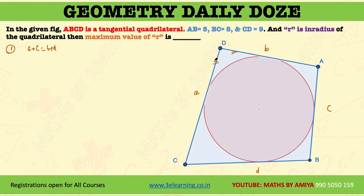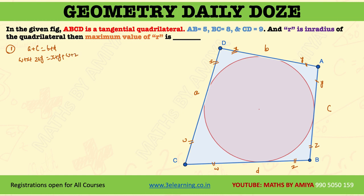How come? Because tangents are equal. If you say X, then it will be X. If you say Y, then it will be Y. If you say these two tangents are Z in length, then it will be Z. This one is W in length. So A is nothing but W plus X, and C is nothing but Z plus Y, so we have X plus Y plus Z plus W. Similarly, B is nothing but X plus Y, and D is nothing but W plus Z. So we have again X plus Y plus Z plus W on both sides. So A plus C equals B plus D always holds for a tangential quadrilateral.